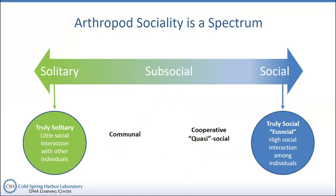There's a lot of different terminology out there, and I prefer to think of the low end, closer to solitary, as communal behavior — describing when invertebrates occupy the same area as one another. Technically, communal behavior describes when individuals share the same nest, literally all living in the same nest collectively, but have no real interest in interacting beyond that. As we move up towards the eusocial end, we see cooperative or quasi-social behavior.